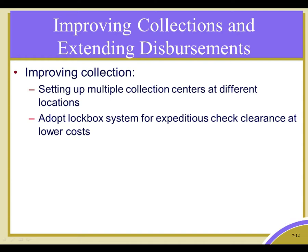Another alternative is something referred to as a lockbox. You can adopt a lockbox system for rapid check clearance — essentially a post office box. When a customer of the electric company makes a payment, that payment is sent directly to a post office box that the bank actually has access to. The bank will open the box, collect all the checks, and immediately make the deposit without the check ever passing through the hands of the electric company. Rather than the check going to the electric company and then to the bank, the lockbox allows the customer's payment to go directly to the bank. All the customer sees is that it's being mailed to a post office box.